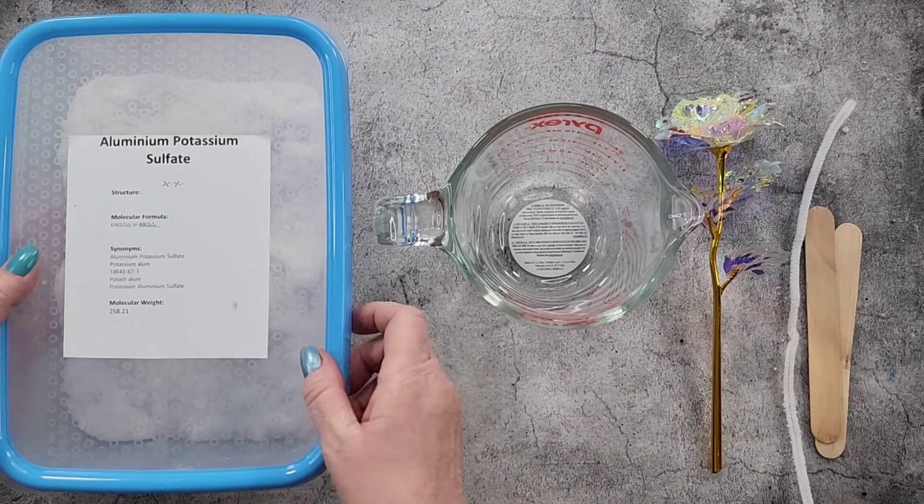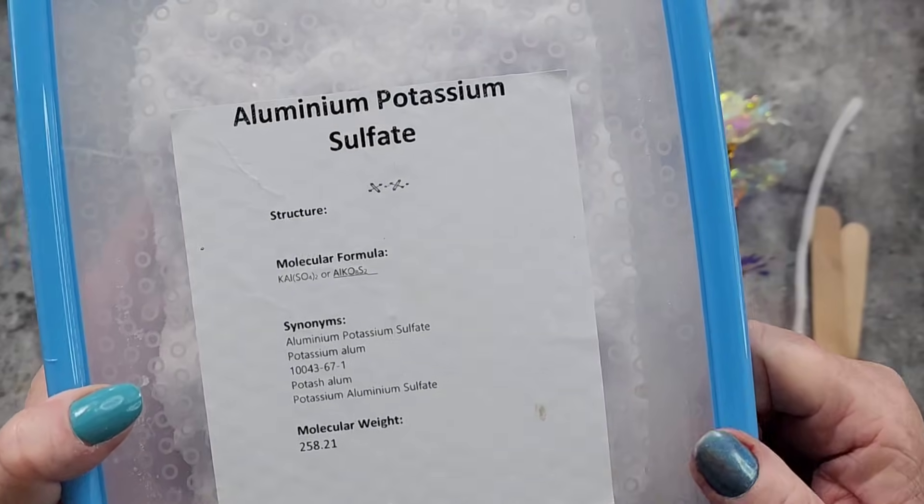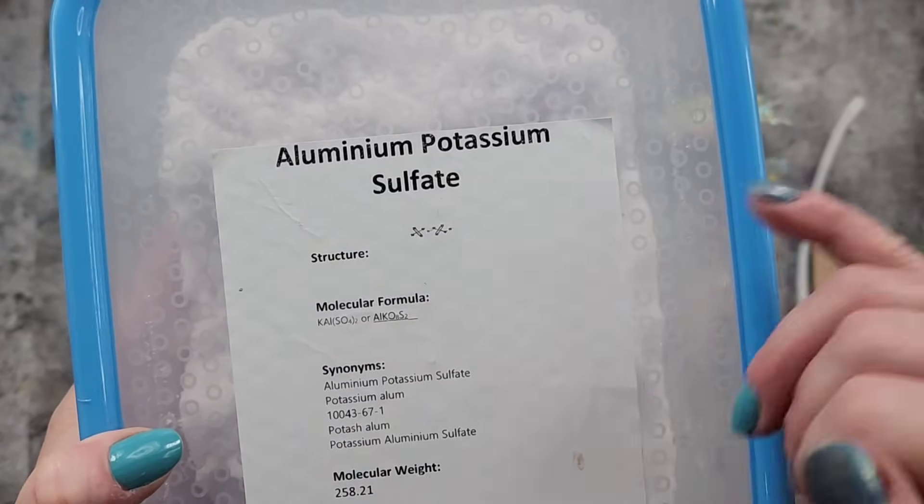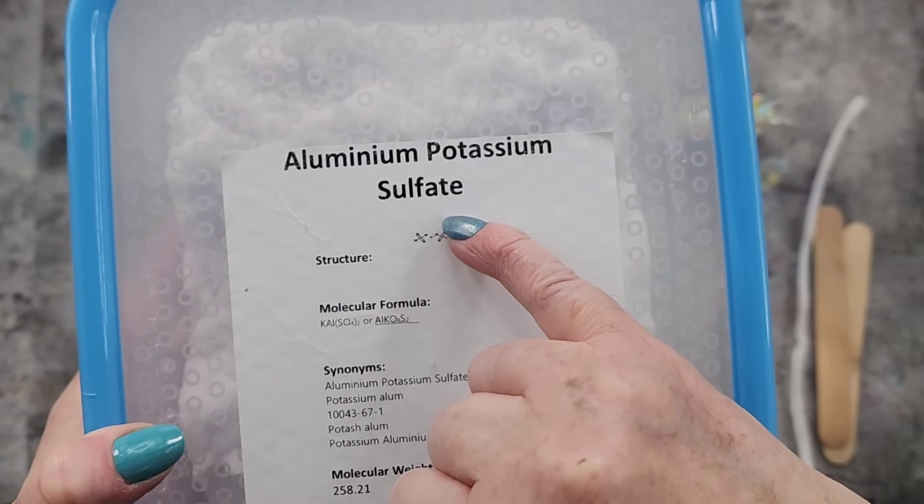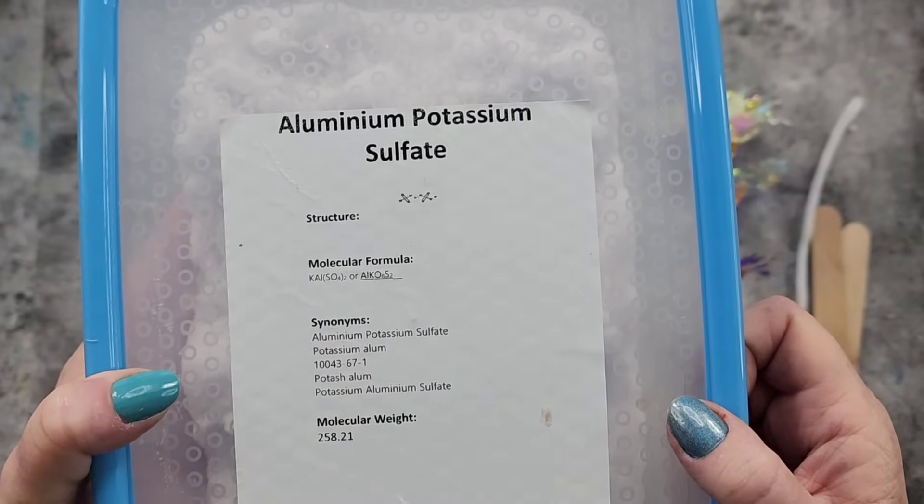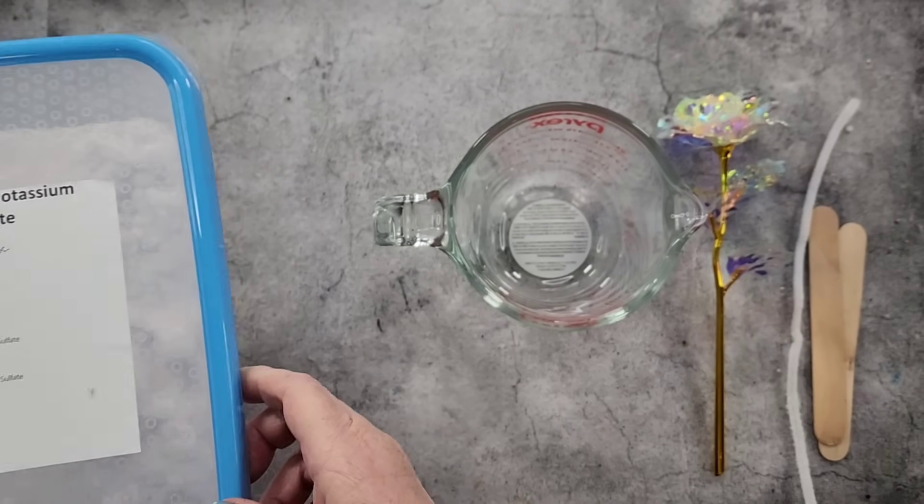So what I've got is some alum powder. I've just put it in my own container. It's just easier for me. Aluminium potassium sulfate. Alum powder. So that's what I'm going to use.